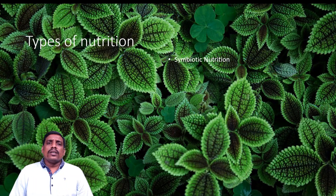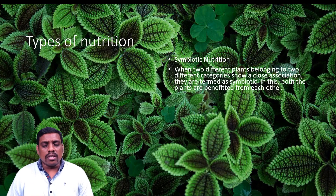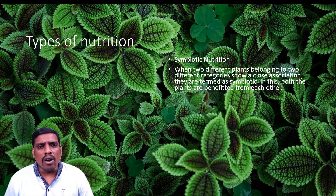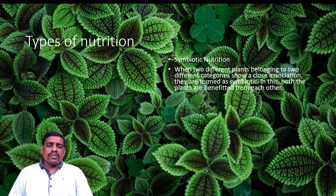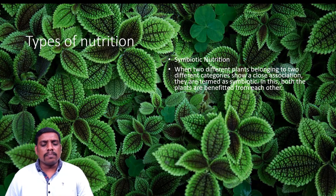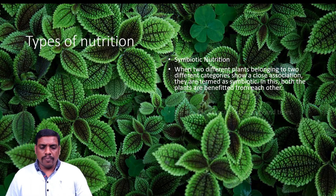Symbiotic nutrition occurs when two different organisms show a close association without harmful effects to each other — these are termed symbiotic organisms. Both organisms are benefited from each other by obtaining food materials or food molecules from the association.